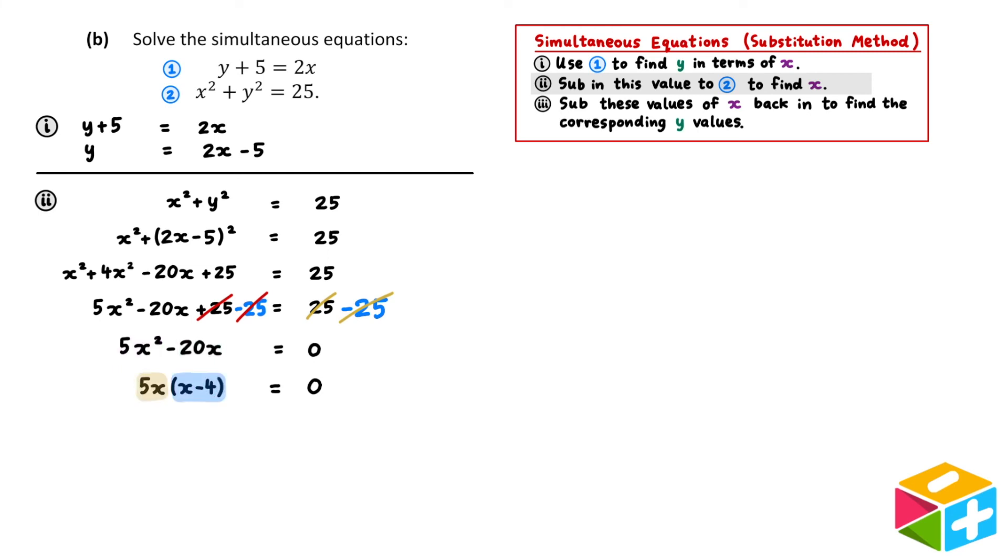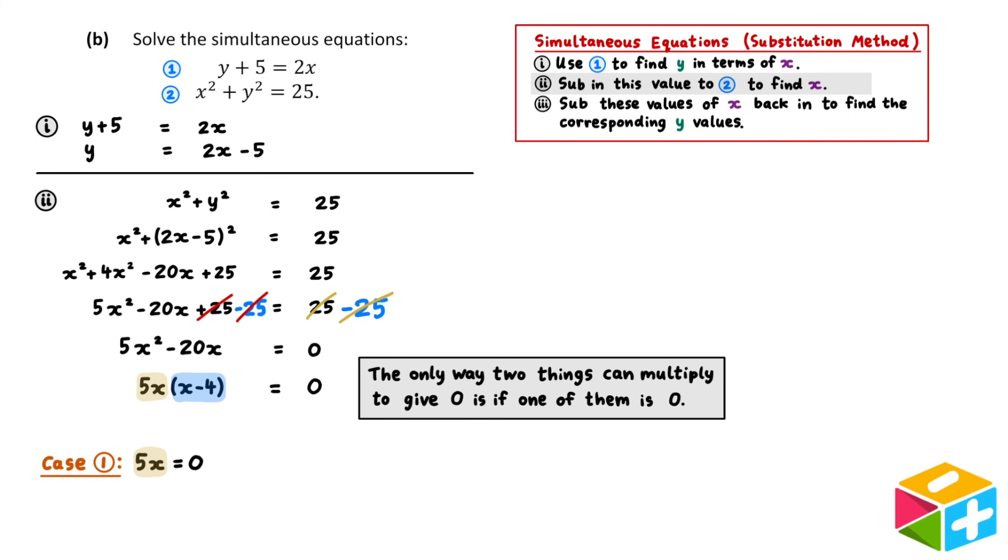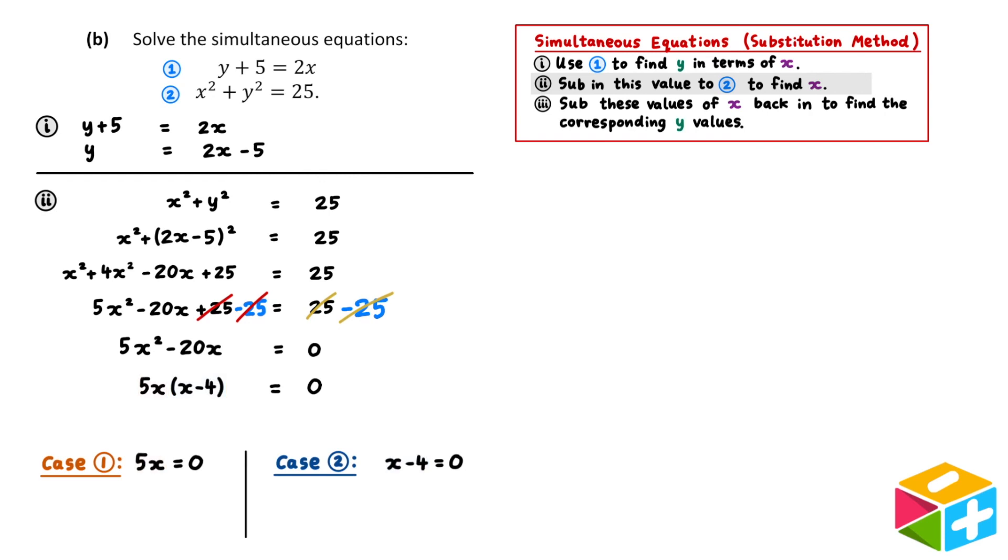We now have an equation where two terms are multiplying together to give zero. And the only way two things can multiply together to give zero is if one of them is zero. So there's two cases, either 5x is equal to zero, or x minus 4 is equal to zero. We can solve for x in both of these situations. So we found two answers for x, x is equal to zero and x is equal to 4.